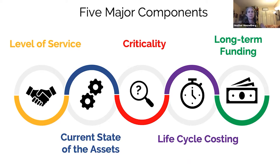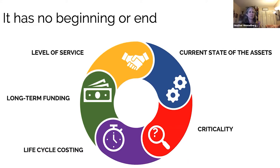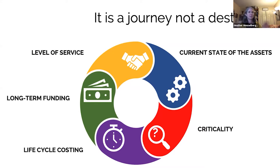These five questions have labels: level of service, current state of assets, criticality, life cycle costing, and long-term funding. Asset management is not linear at all — it's very circular; everything connects to everything else. It has no beginning or end. There really isn't a beginning to the process and there's not an end because asset management is a journey, not a destination. We're always looking for continuous improvement — you'll never say 'I'm done with it.'